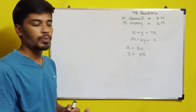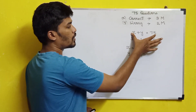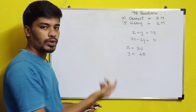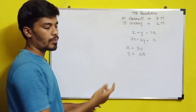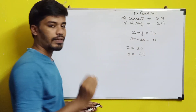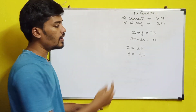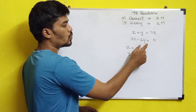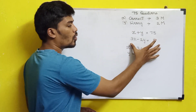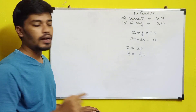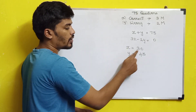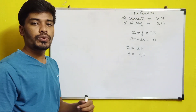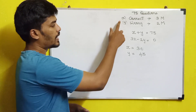To solve, we write two equations. The first equation: the total number of questions is 75, so x plus y equals 75. The second equation: the correct answers give 3 marks each, and wrong answers deduct 2 marks each, so 3x minus 2y equals 0, since the overall total score is 0.